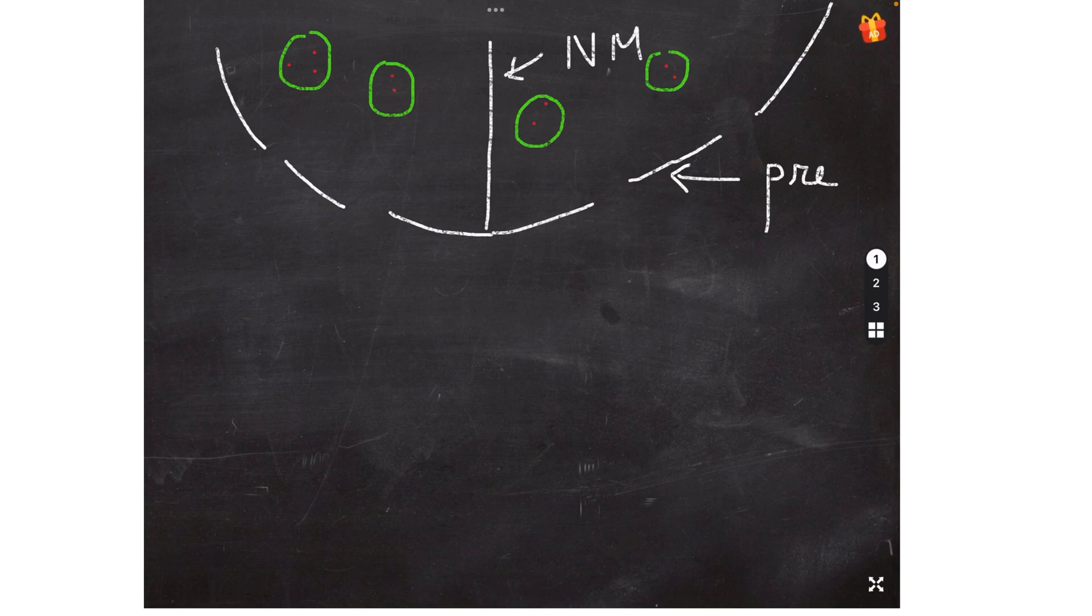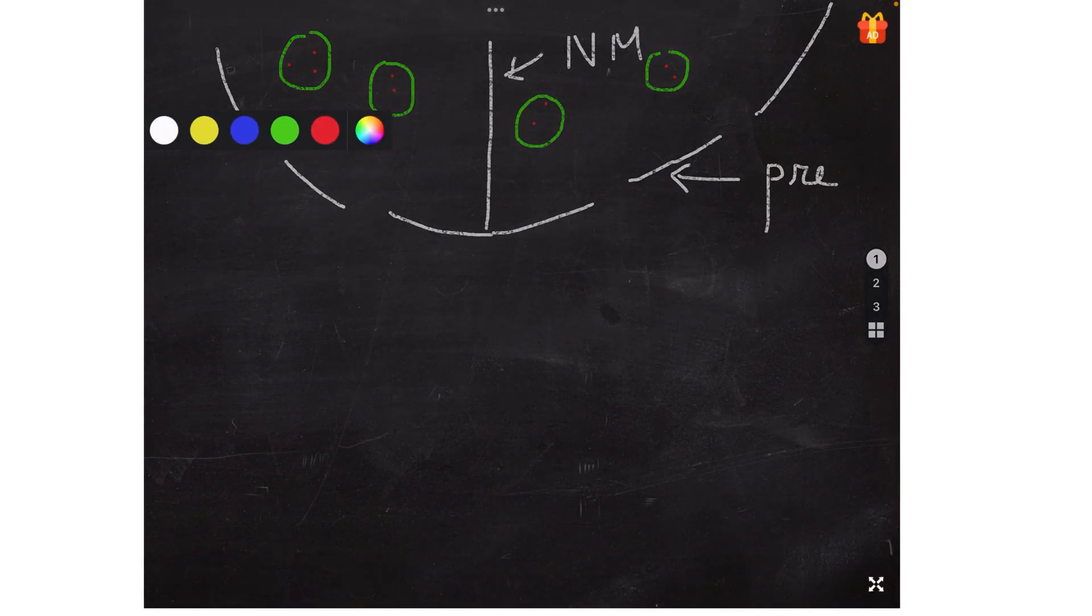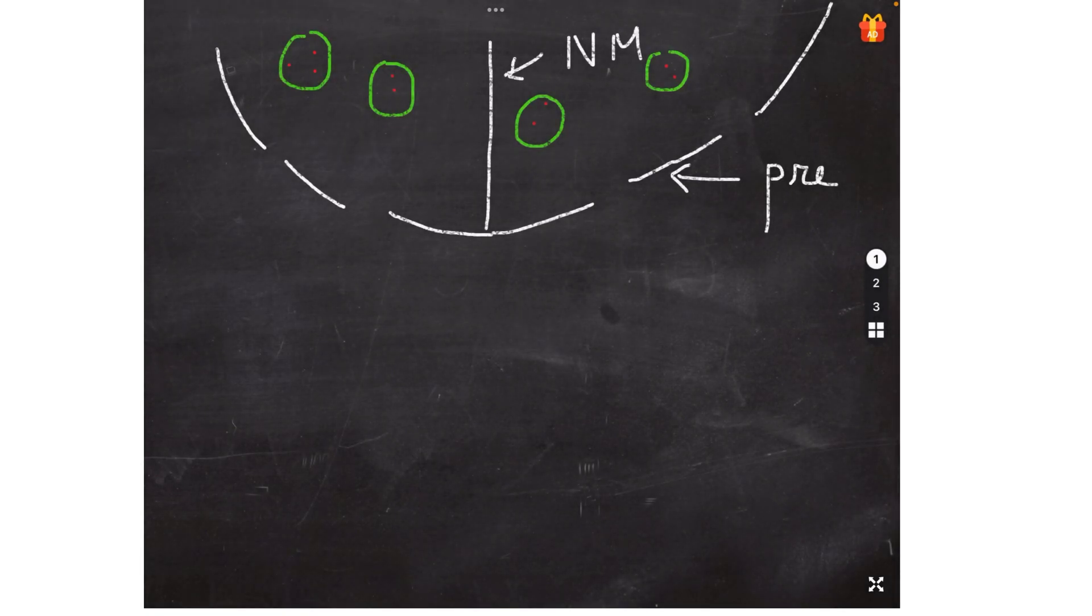Now here there is one more important part that is the dense bar. Here also there is something called as the dense bar. So the dense bar is also called as the active zone.